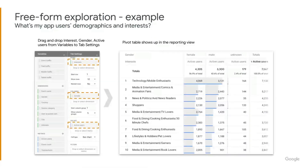Next, we have free-form exploration. This is really a table report that you can add the dimensions and metrics to that you want to analyze together. So here we're looking at a pivot table to analyze gender, interests, and users across various demographics and interests.